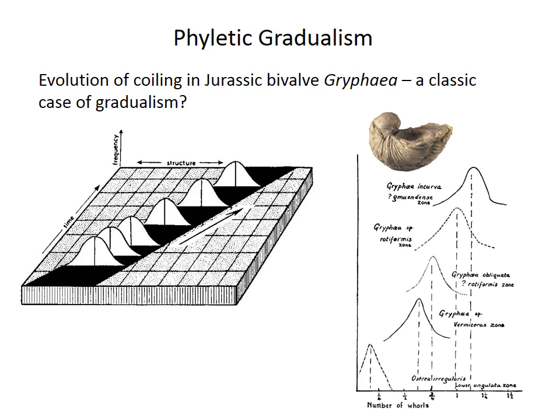One of the classic examples originally proposed as phyletic gradualism is the evolution of shell coiling in this Jurassic bivalve called Gryphaea. The horizontal axis on the right-hand plot measures the degree of valve coiling, and there are five different species shown vertically as peaked bell curves. These five species seem to follow a pretty nice gradual increase in the degree of shell coiling, from barely coiled to having one full coil to even one and a quarter full coils at the top.